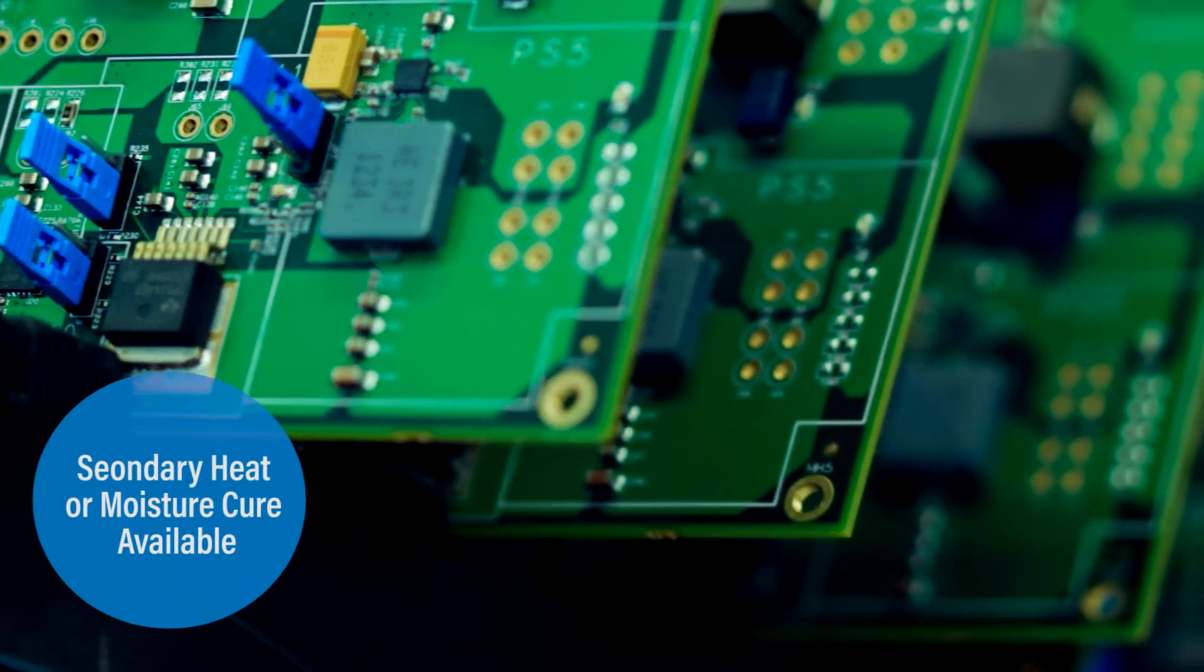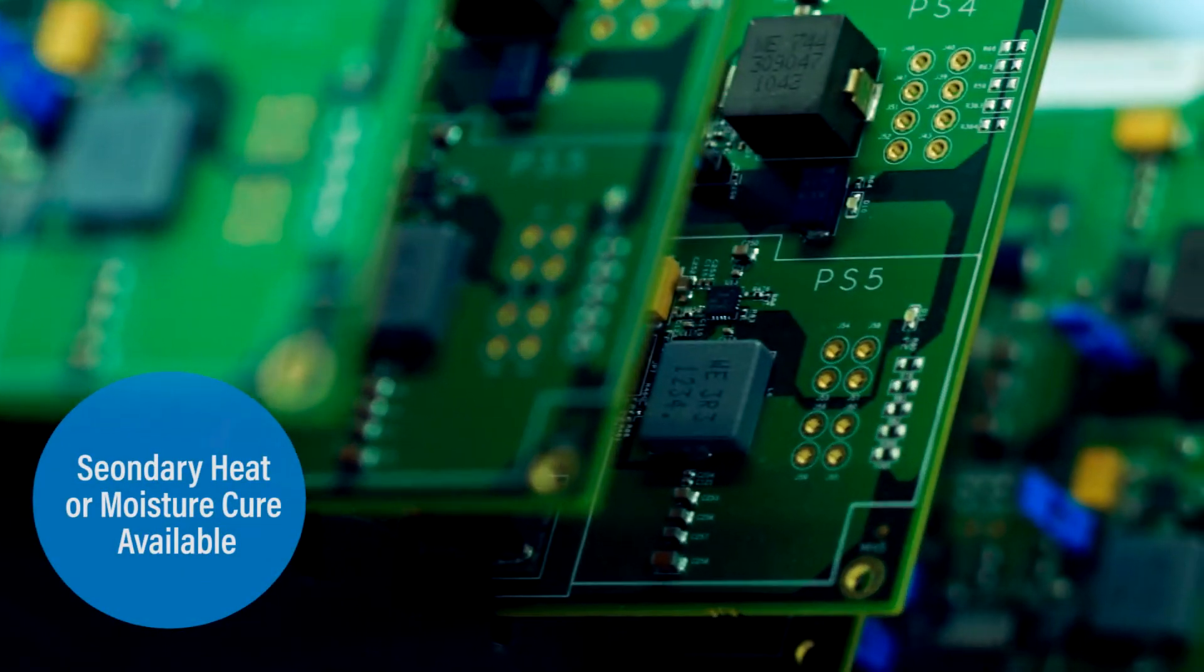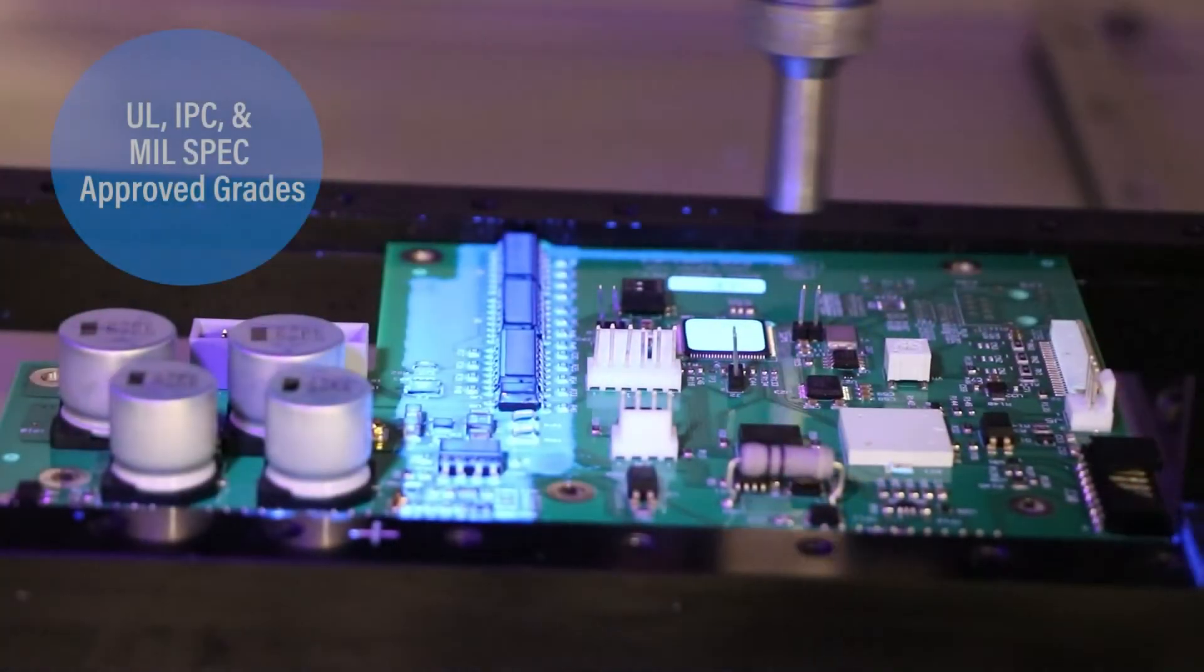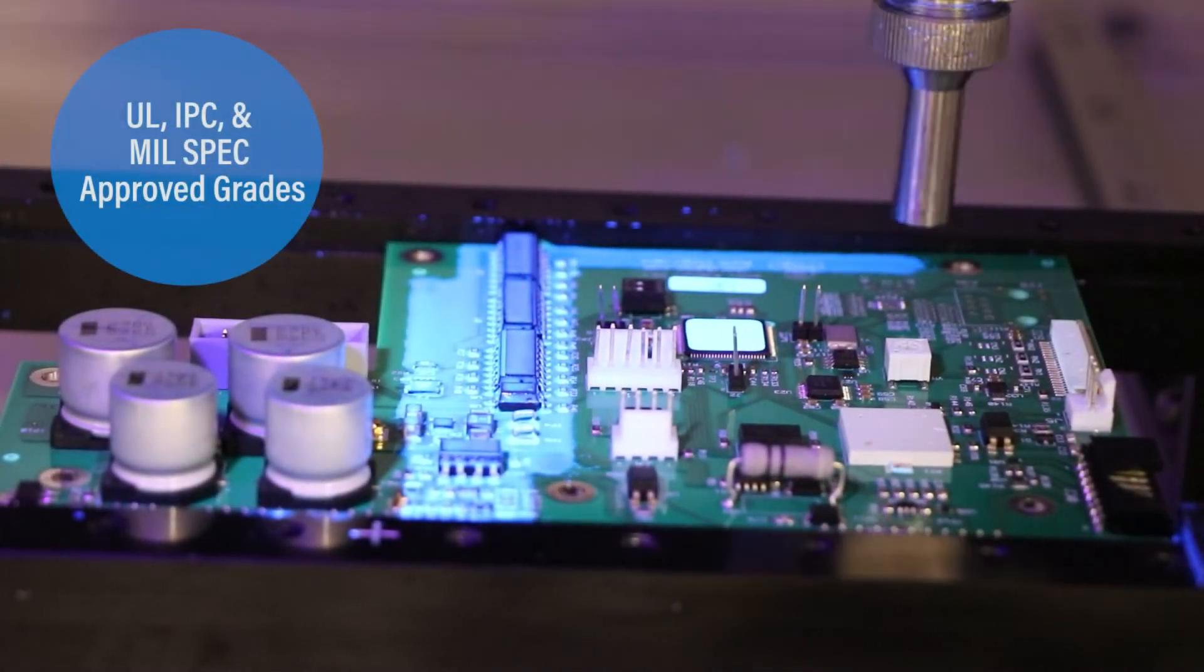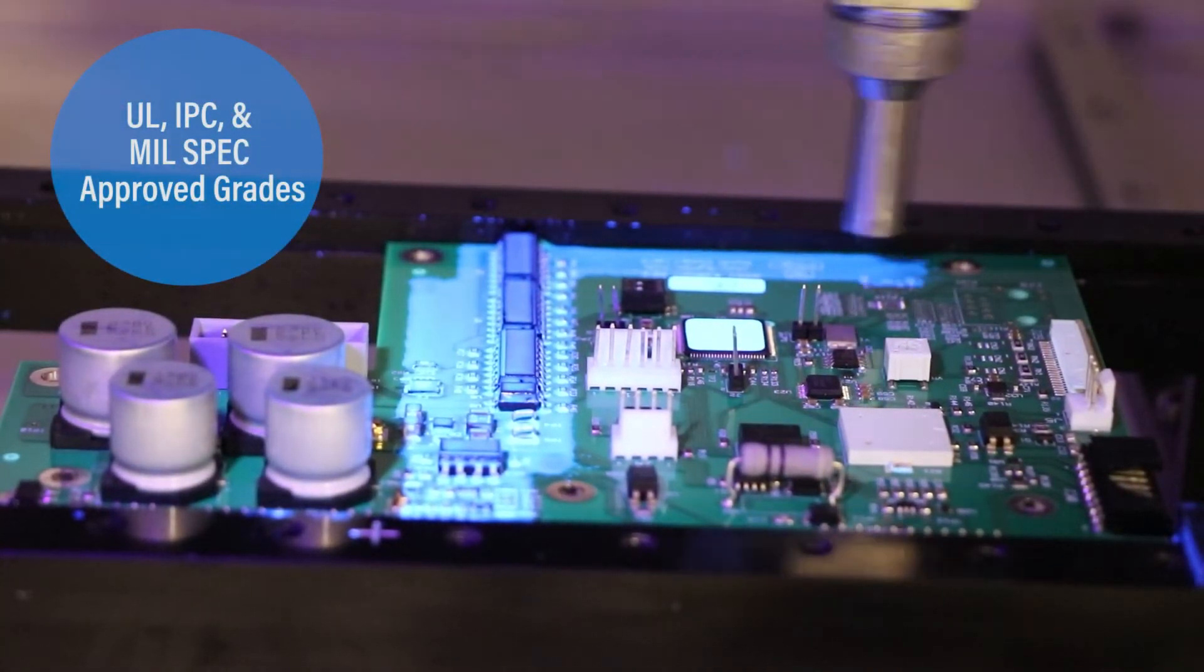Secondary heat and moisture cure capability is available for PCB shadow areas, and many coatings have UL94 ratings and IPC and MIL-Spec approvals.